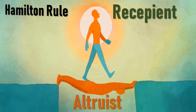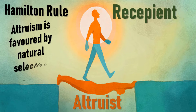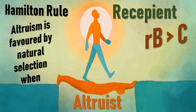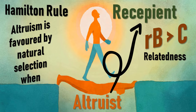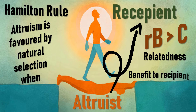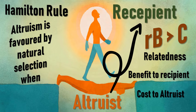Hamilton's Rule states that altruism is favored by natural selection when r × b is greater than c. Here, r is the relatedness of the altruist to the recipient — meaning genetic relatedness, not friendly relatedness. b is the benefit acquired by the recipient, and c is the cost of the act to the altruist. This means that the relatedness and the benefit must always be more than the cost of performing the act.